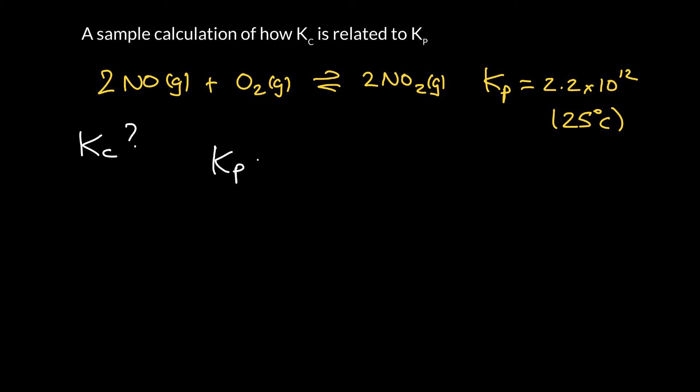So if you remember from the last lecture, Kp is related to Kc through this expression here. So it's equal to Kc times RT to the change in number of molecules of gas. So remember, that's the number of gas molecules on the product side minus the number of gas molecules on the reactant side.